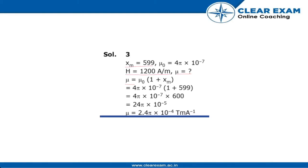Mu is equal to mu0 times (1 plus xm), which is 4 pi into 10 to the power minus 7 into (1 plus 599), which is 4 pi into 10 to the power minus 7 into 600. So the permeability of the material of the rod is 2.4 pi into 10 to the power minus 4.